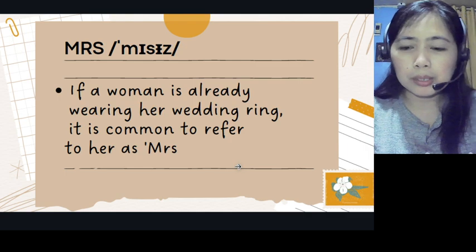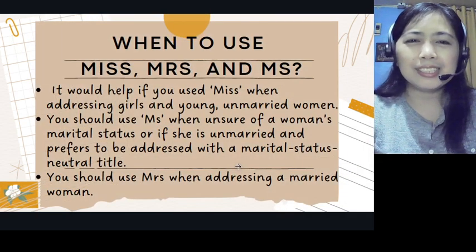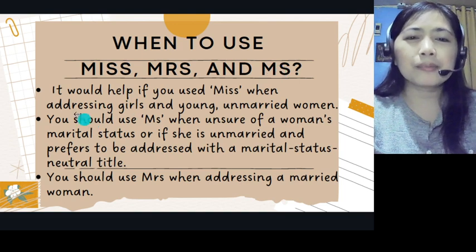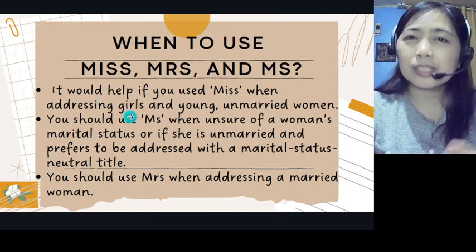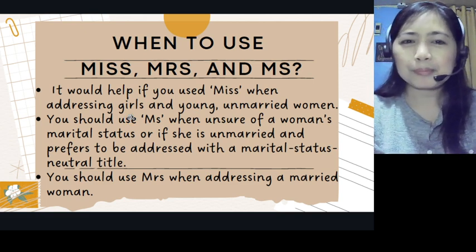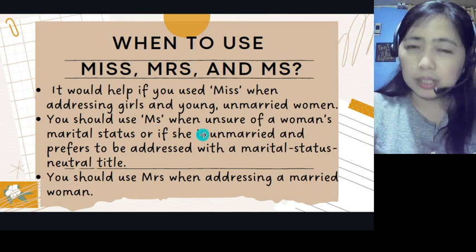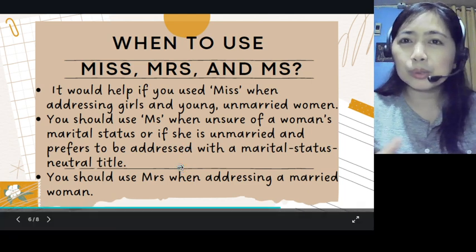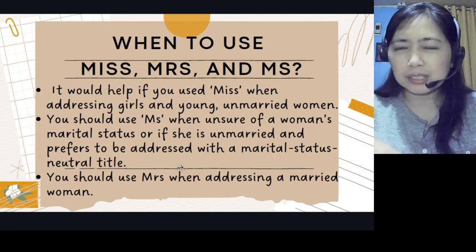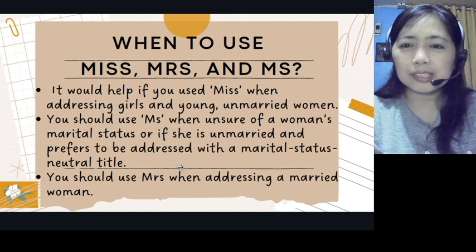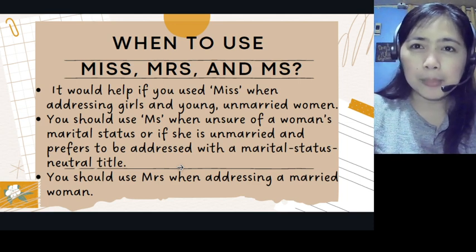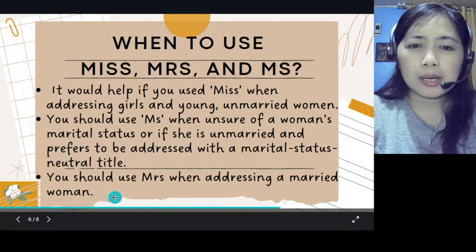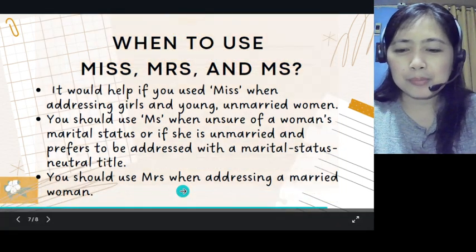To clarify when to use each title: use Miss when addressing girls and young unmarried women. Use Ms. when you're unsure of a woman's marital status, or if she is unmarried and prefers a marital-status-neutral title — for example, if she's divorced, still engaged, or it's up to her preference. And you should use Mrs. when addressing a married woman.